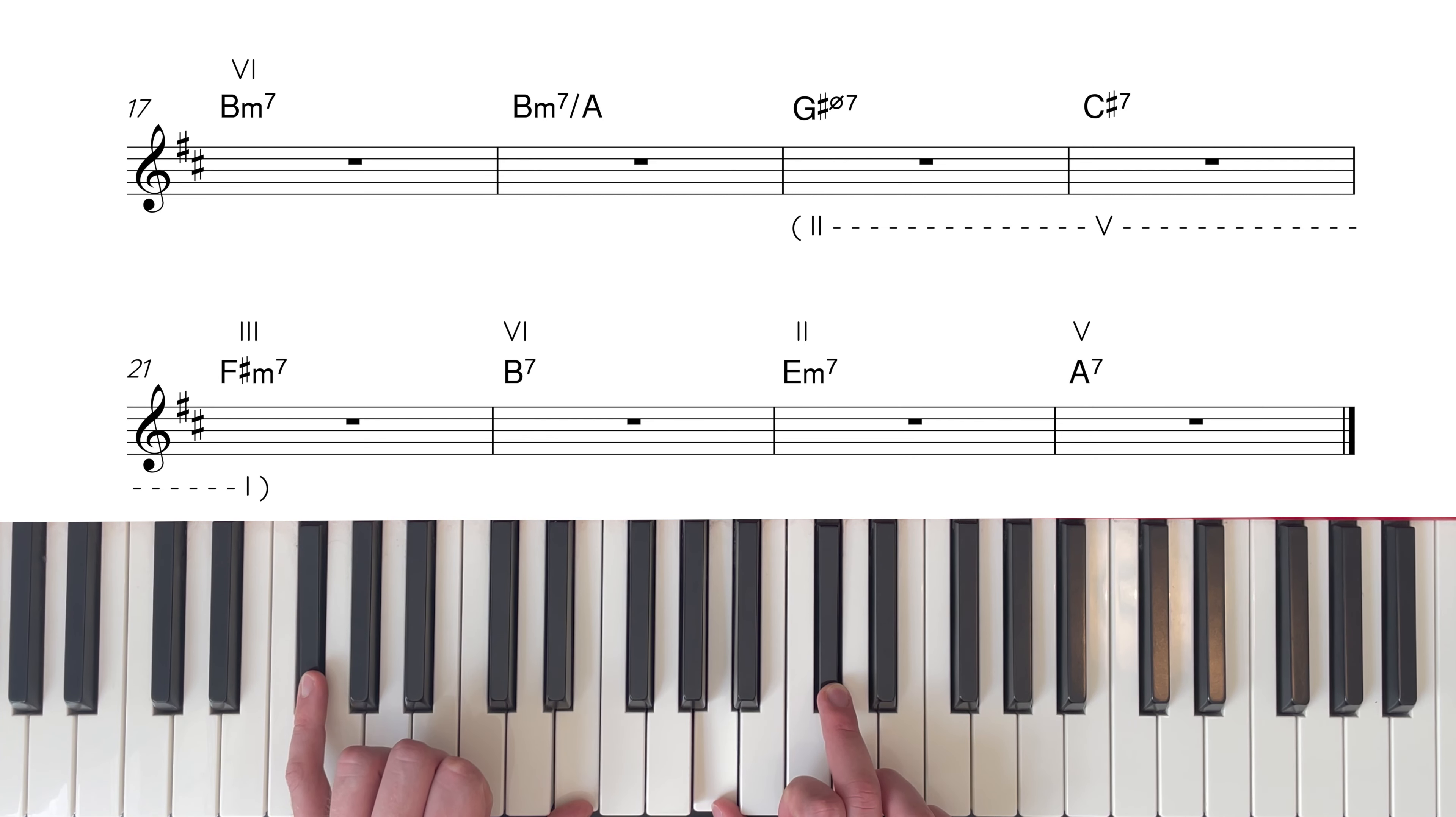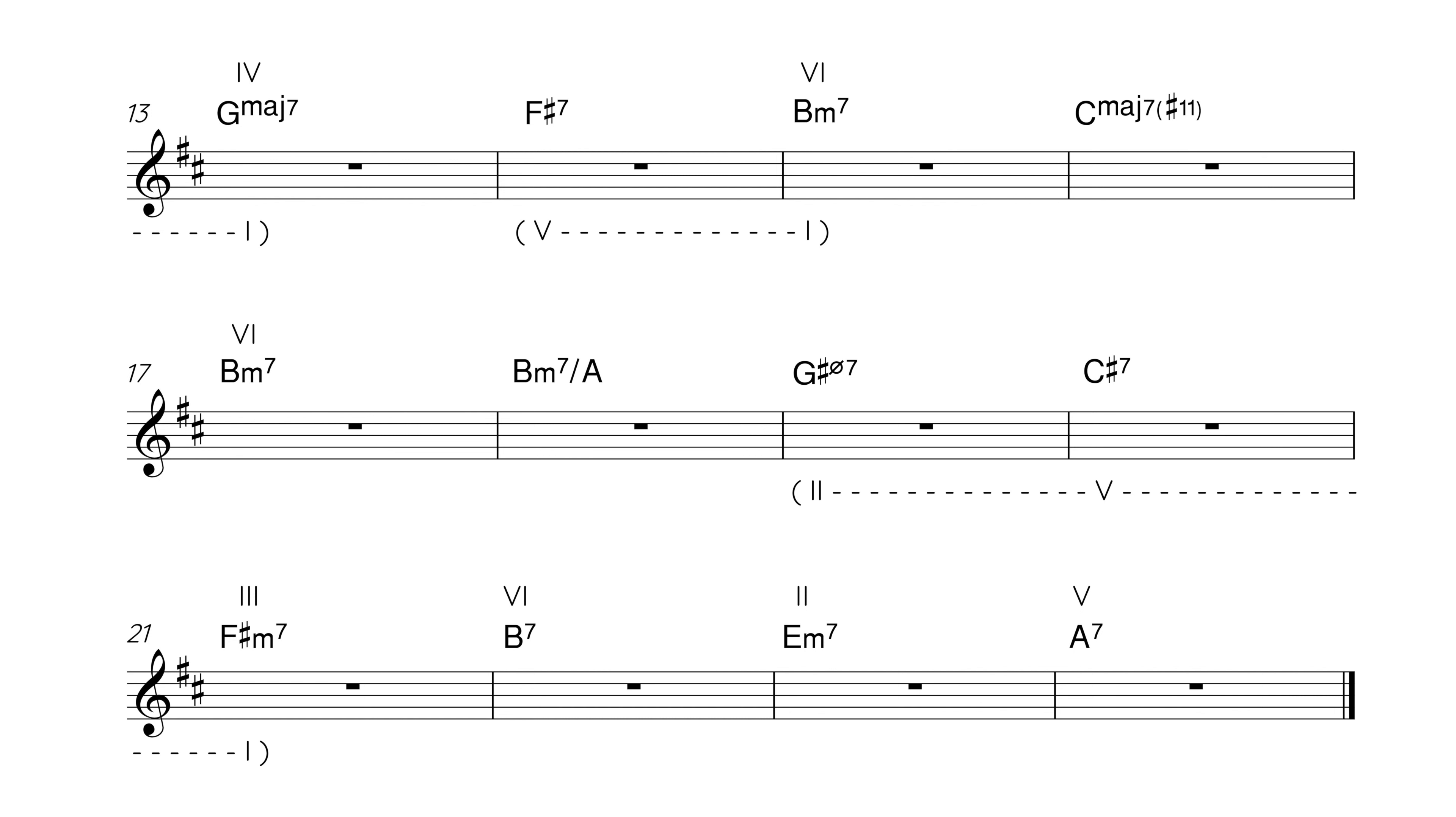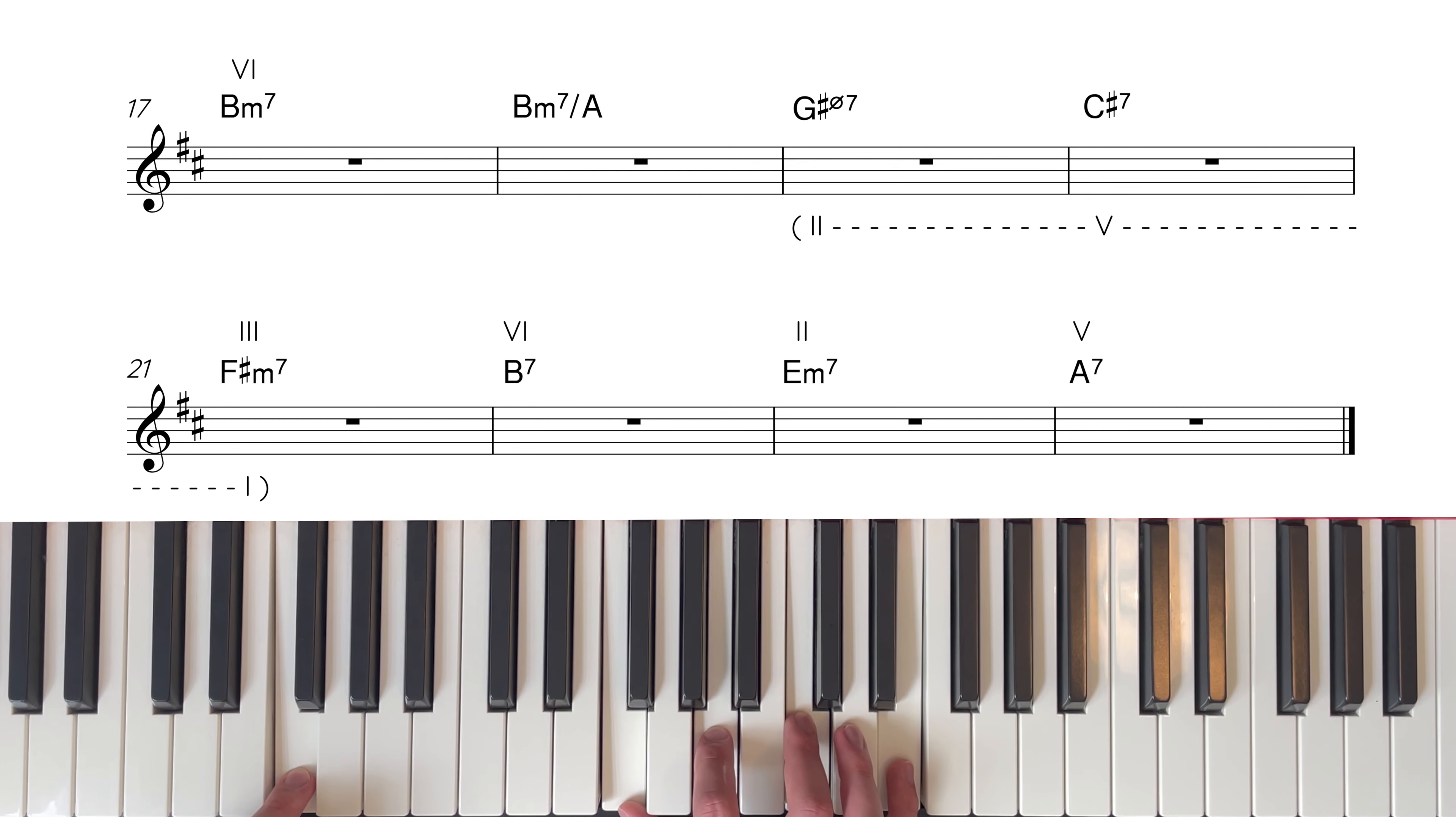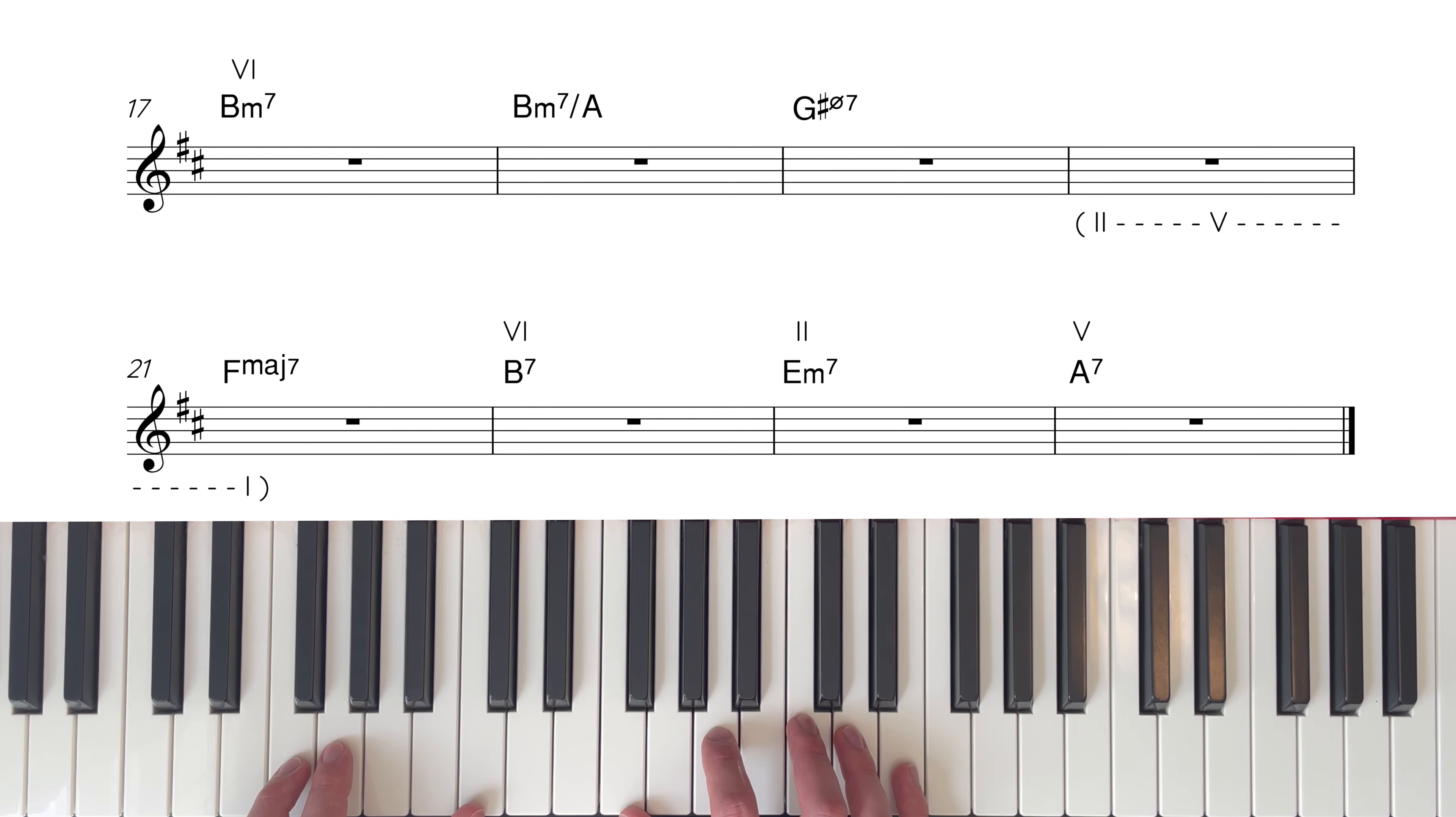The 3rd line copies the harmonic movement from the standard Green Dolphin Street specifically the C section. This little harmonic chunk pops up in lots of jazz standards and it's worth getting familiar with it in a few keys. So we start on B minor 7 then the bass note drops to the 7th A whilst the chord remains the same making the chord B minor 7 over A. Next, the bass note falls another semitone to G-sharp and this becomes a starting point of a minor 2-5-1. If G-sharp half diminished is the 2 chord then this means C-sharp 7 is the 5 chord and F-sharp minor 7 is the 1 chord which is exactly where the 4th line begins.